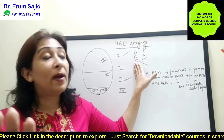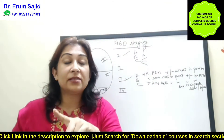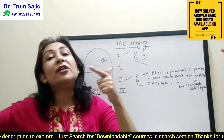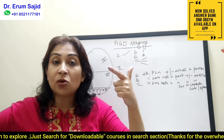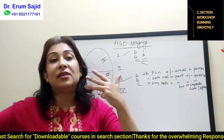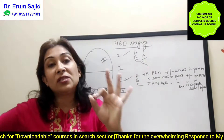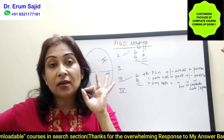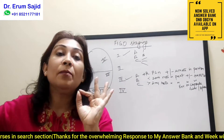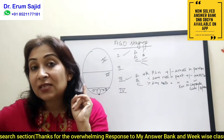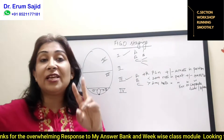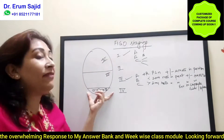Stage one C has three sub-categories: C1 is surgical spill; C2 is either malignant cells on the surface or capsule breached; C3 is positive malignant cells in the cytologic sample of ascitic fluid — meaning you tap the ascitic fluid and it comes positive for malignant cells.